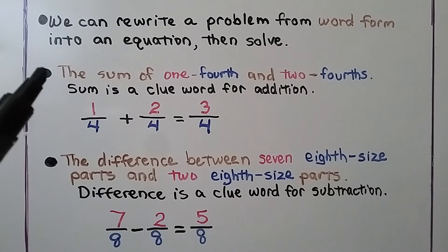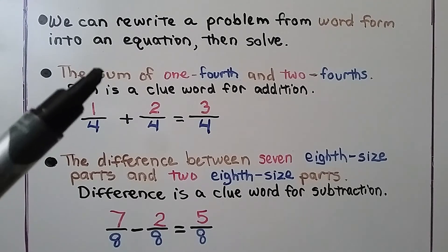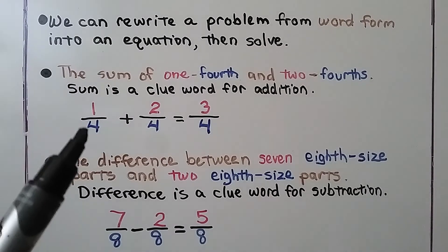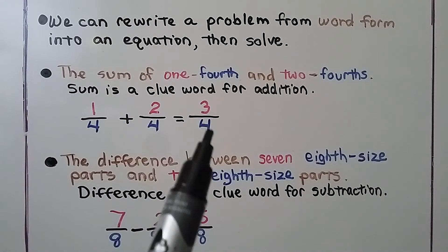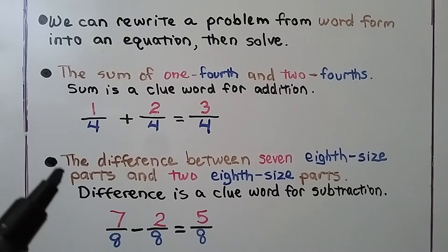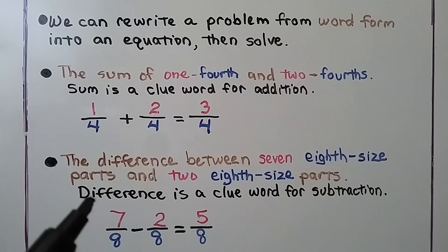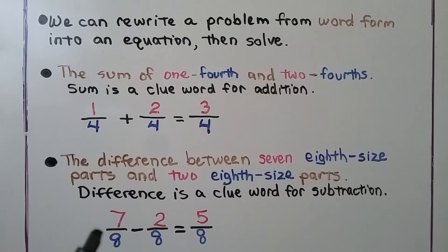We can rewrite a problem from word form into an equation and then solve. Here's our problem: 'the sum of one-fourth and two-fourths.' The word 'sum' is a clue for addition, so we have one-fourth plus two-fourths. We slide the denominator across, getting four, and add one plus two which is three — it's equal to three-fourths. 'The difference between seven eighth-size parts and two eighth-size parts' — 'difference' is a clue word for subtraction. We write seven-eighths minus two-eighths, slide the denominator over, and do seven minus two which equals five, giving us five-eighths.